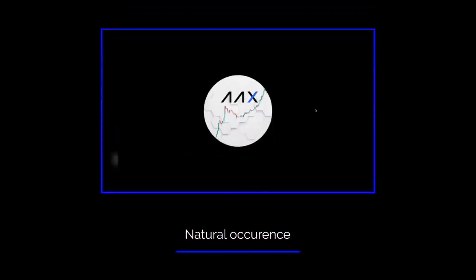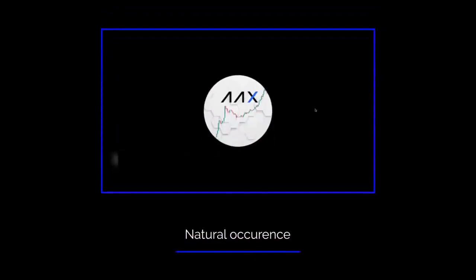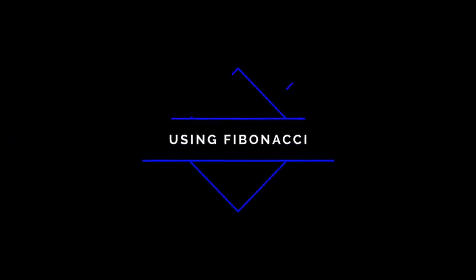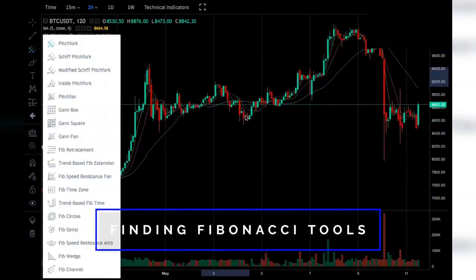Why do traders use Fibonacci? The Fibonacci ratio is seen all around the world — examples include Leonardo da Vinci's Vitruvian Man or the nautilus shell. Due to the exponential occurrence of the divine proportion in the natural world, traders believe that the Fibonacci ratio is also applicable to trading.